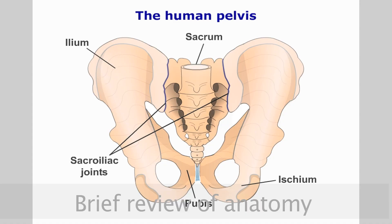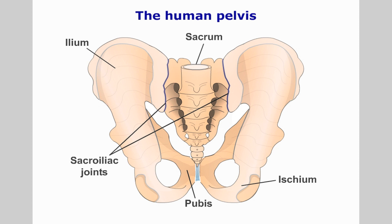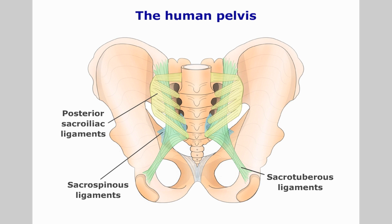Now let us examine the sacroiliac joints. These are to a greater part synovial joints, formed between the iliac bones and the sacrum. The lateral wings of the sacrum have a roughened hyaline cartilage known as the auricular surface. These interlock and articulate with the ilia.